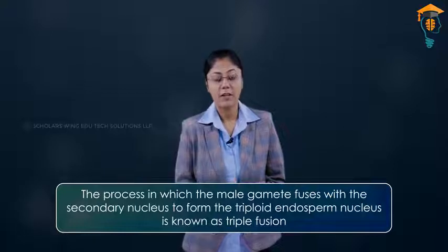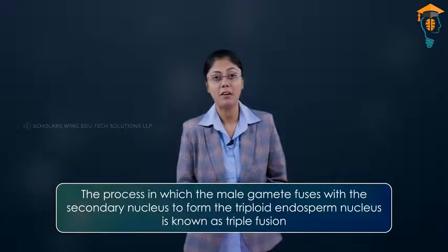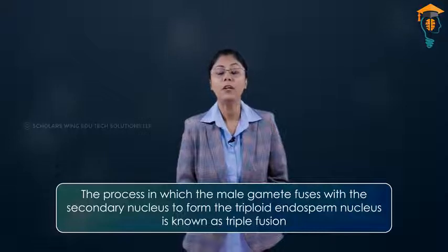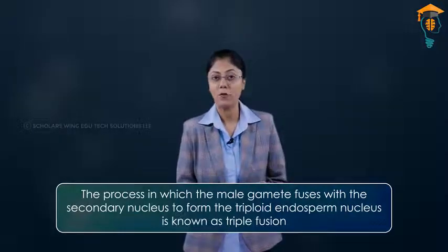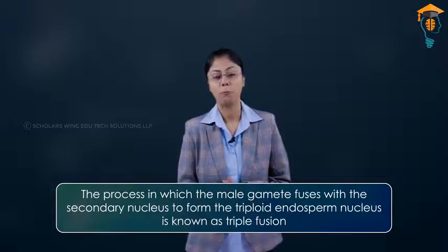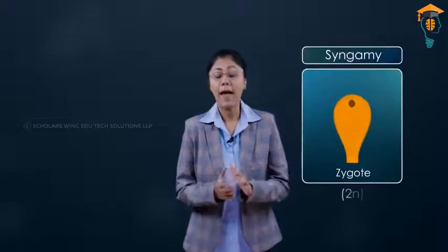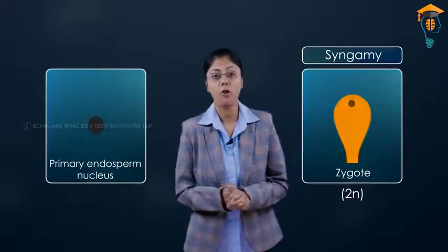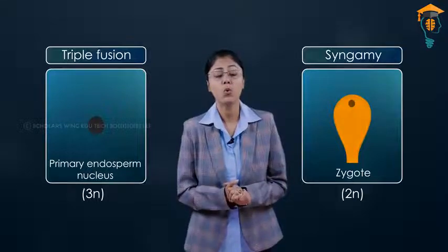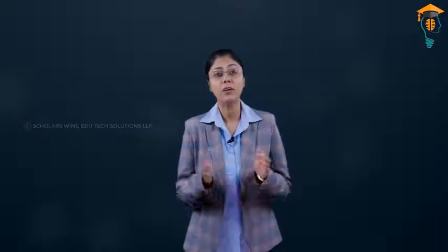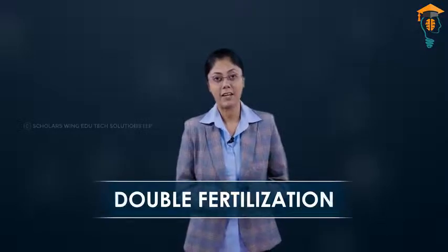This process in which the male gamete fuses with the secondary nucleus to form the triploid primary endosperm nucleus is known as triple fusion. So you see, my dear students, that there are two fusions involved here. One is the process of syngamy and the other is the process of triple fusion. So as there are two fertilizations or two fusions taking place, these two events, that is syngamy and triple fusion, are together known as double fertilization.